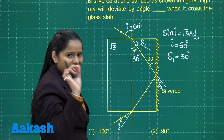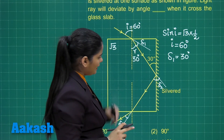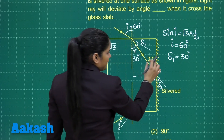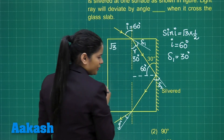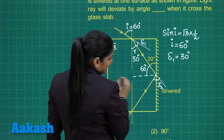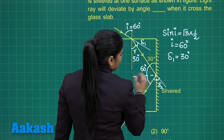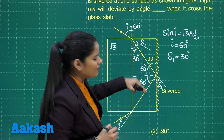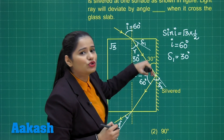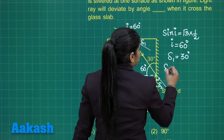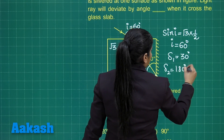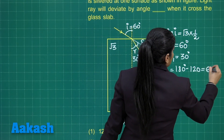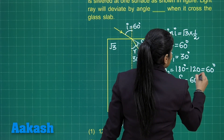We have successfully calculated delta 1. Now, if this was the direction and this is delta 2, I can draw a perpendicular here. This is 30°, so this angle will be 60°. If this angle is 60°, the angle of reflection is also 60° because angle of incidence equals angle of reflection. The deviation is 180° − 2×60° = 60°. So delta 2 = 60 degrees.